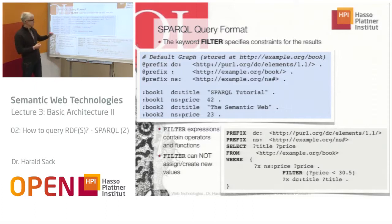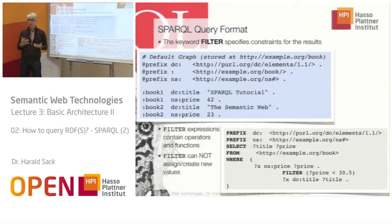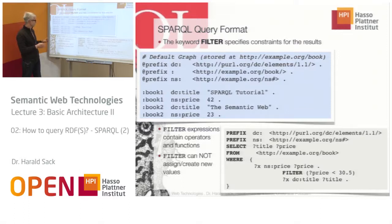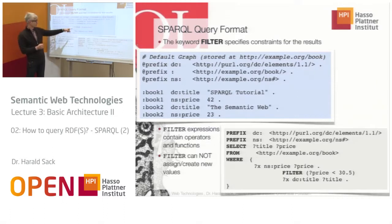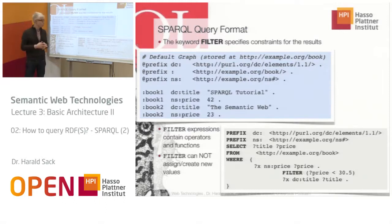Take this as an example. We have a SPARQL knowledge base consisting of three prefixes: the DC prefix standing for Dublin Core for characterizing bibliographies, a default prefix, and another namespace prefix. We have a book with a DC title 'SPARQL Tutorial' and a price of 42, and a second book with the title 'The Semantic Web' and a price of 23.